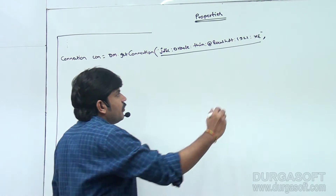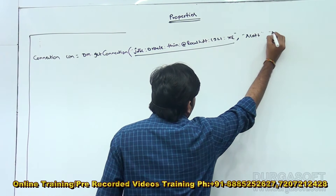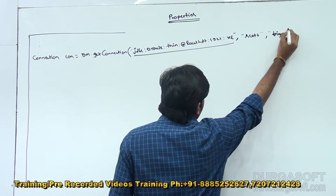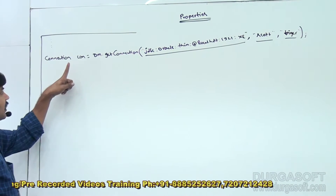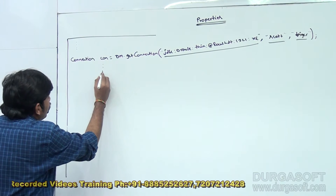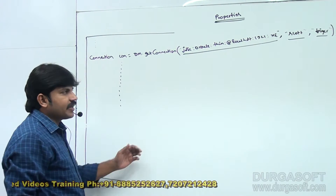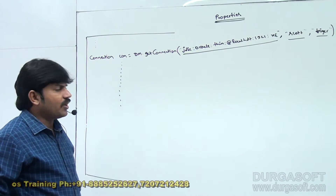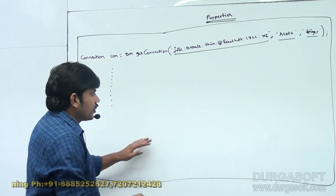The next parameter is the username — Scott — and then the password — tiger. So username is Scott and password is tiger. Once we get the connection object, we can use that connection to communicate with and get data from the database. This is the small Java program we have.